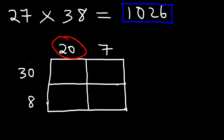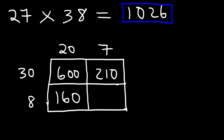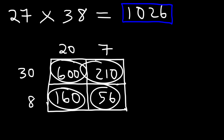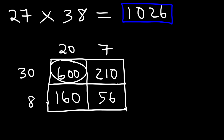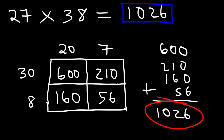Multiplying 20 by 30 gives 600, then 7 times 30 is 210, 20 times 8 is 160, and 7 times 8 is 56. After that, you sum up all four numbers in the box: 600 plus 210 plus 160 plus 56 gives us 1026. That's how you multiply using the area model method.